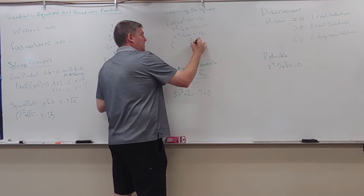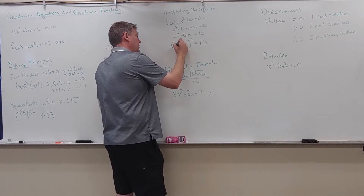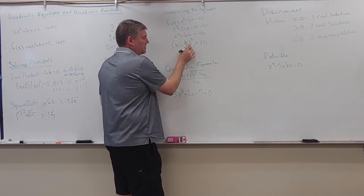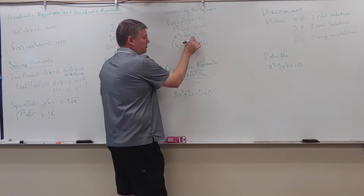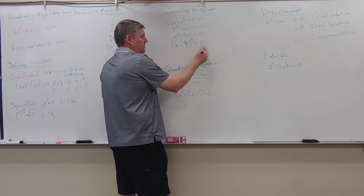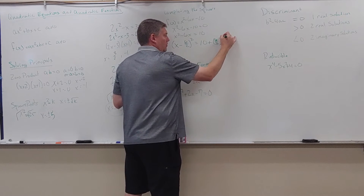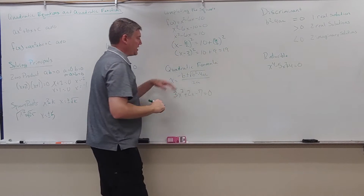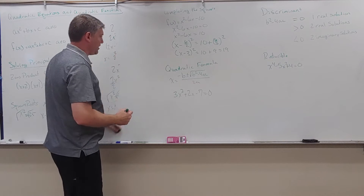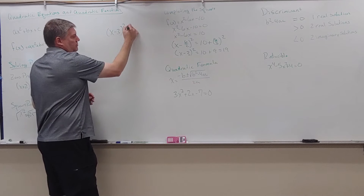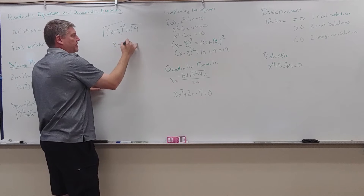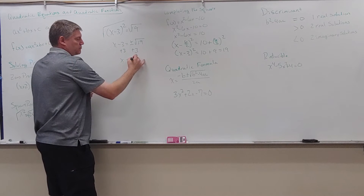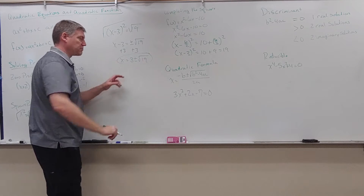Now I want to break this into a perfect square. I take the coefficient of x, which is 6, divide by 2 to get 3, and then I must add 6 over 2 quantity squared to both sides. So the left side becomes x minus 3 quantity squared, and the right side is 10 plus 9, which is 19. Squaring both sides gives x minus 3 equals plus or minus the square root of 19. Adding 3 to both sides: x equals 3 plus or minus the square root of 19. Those are my two answers.